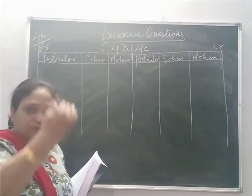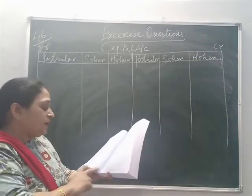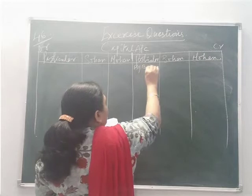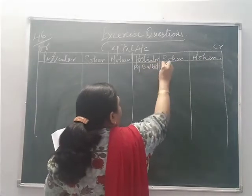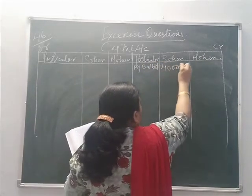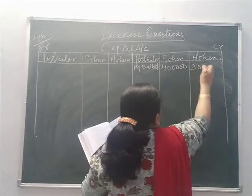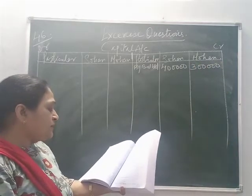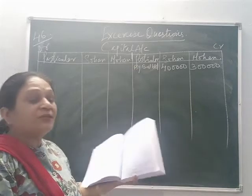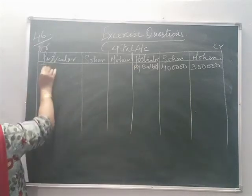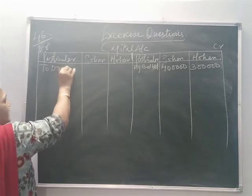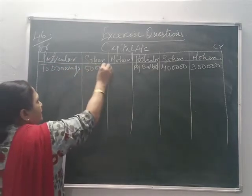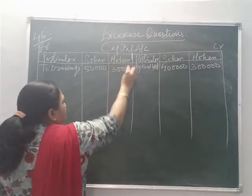Opening balances: By balance brought down — Sohan's account 4 lakh, Mohan's account 3 lakhs. Drawings during the year: 50,000 and 30,000. Drawings are placed on the debit side, meaning they are subtracted from the capital. So 50,000 and 30,000 on the debit side.